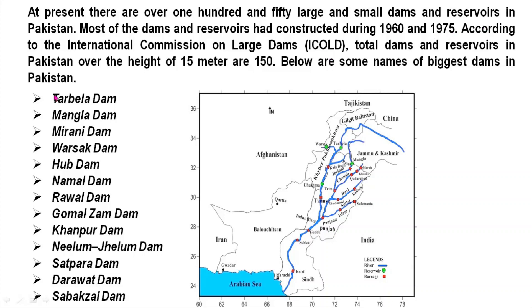According to the International Commission on Large Dams, the total dams and reservoirs in Pakistan over the height of 15 meters number 150. These dams are almost 15 meters in height. Below are some of the names of the biggest dams in Pakistan.